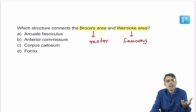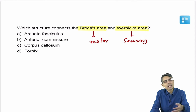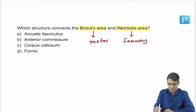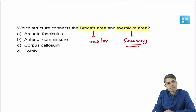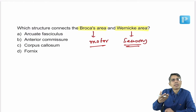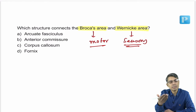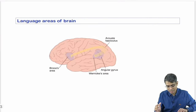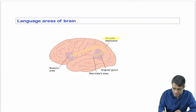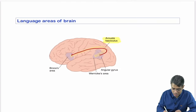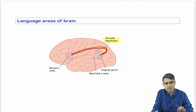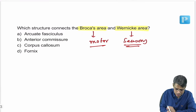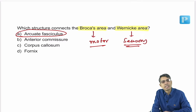When you ask a question, Wernicke's area understands it; then Broca's area produces the spoken reply. The connection between Broca's and Wernicke's areas, as shown in Guyton's diagram, is the arcuate fasciculus. The answer is arcuate fasciculus.